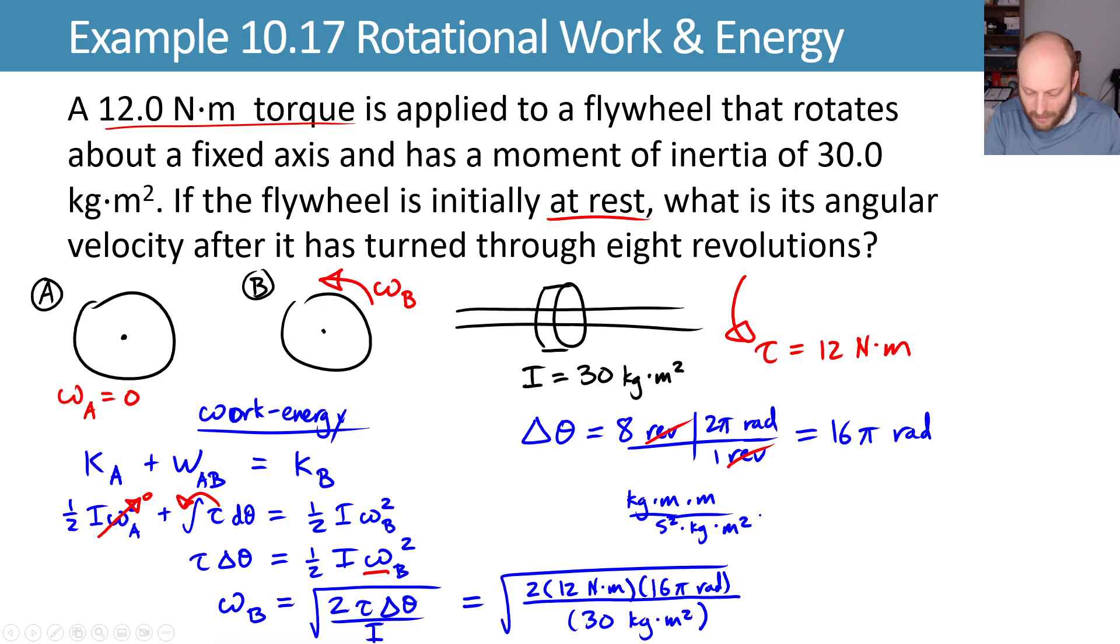That looks pretty good. We can now cancel out the meter squared on the top and the bottom, cancel out the kilograms. We're left with one over seconds squared. When you take the square root, you end up with one over seconds or radians per second. Exactly what we would hope, which gives us a numerical value of 6.3 radians per second.